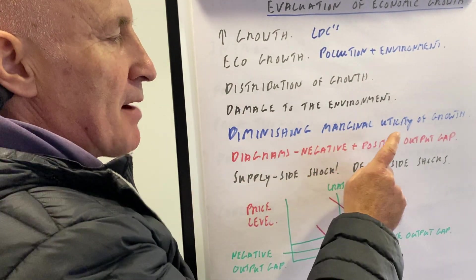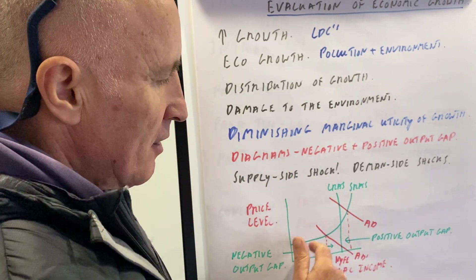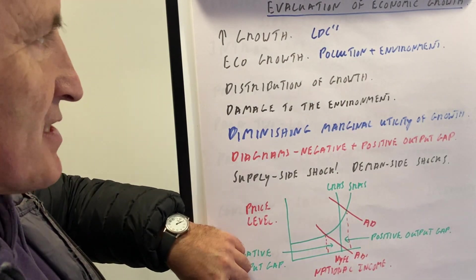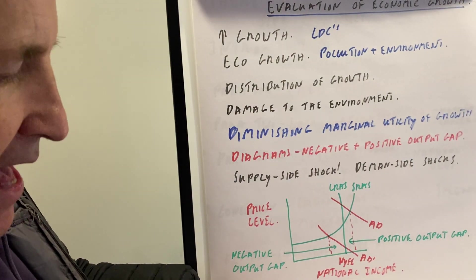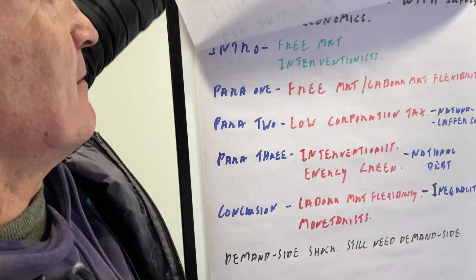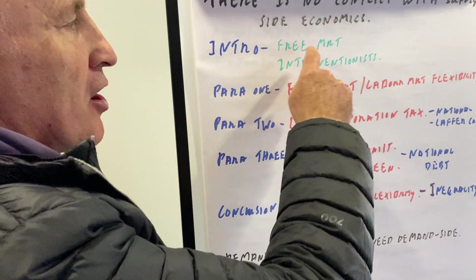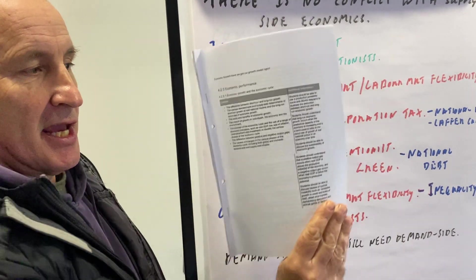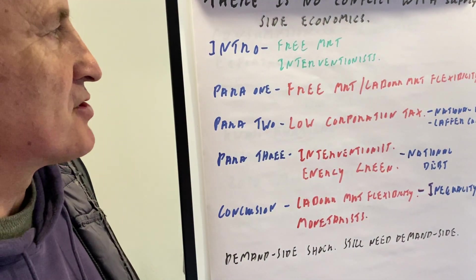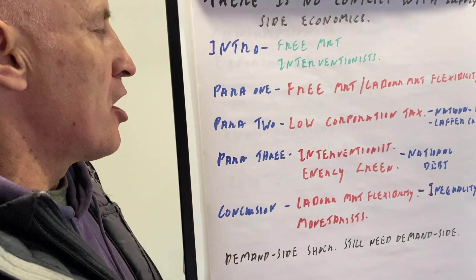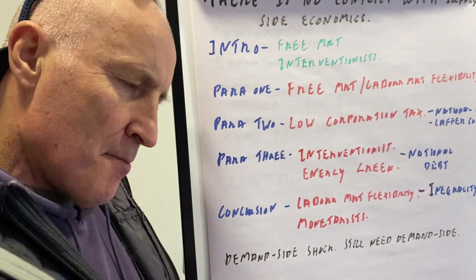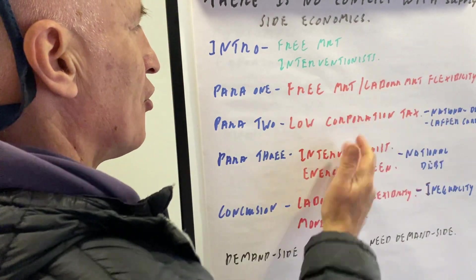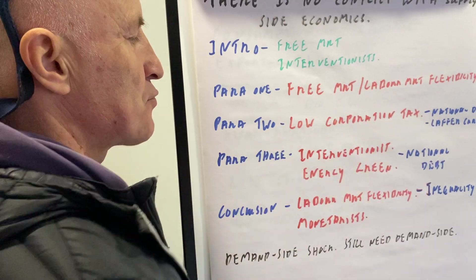We have diagrams showing negative and positive output gaps, and you can show both on one diagram. Evaluating economic growth — remember it is a bit of a raw indicator. Regarding the essay on supply-side economics and whether there's no conflict: the intro covers free market versus interventionist approaches. Paragraph one: free market labour market flexibility pushes out the supply curve through more enterprise, more investment, and possibly lower wages — but it could lead to a rise in inequality.